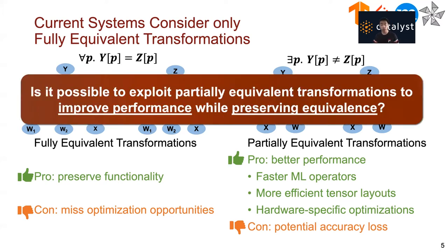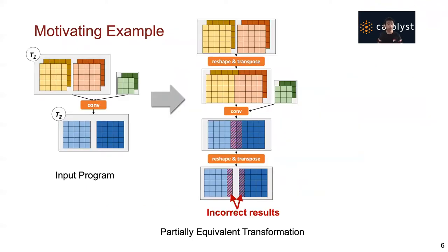One question we try to address in this work is: is it possible to achieve the benefits of both worlds? Is it possible to exploit partially equivalent transformations to improve runtime performance while still preserving end-to-end equivalence? This idea may seem counter-intuitive, but let me first show you a motivating example.